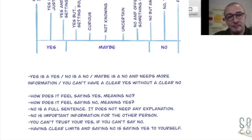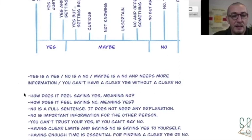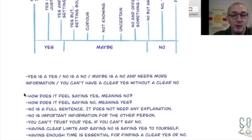Essential for finding your no or your yes is having enough time to choose. So pressure is most of the case an indicator that somebody else is not respecting that you might have a limit.